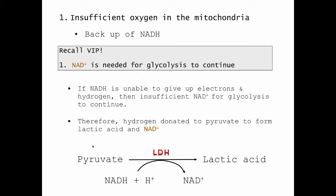So recall, as a stop gap, pyruvate can become a hydrogen acceptor in the presence of the enzyme lactate dehydrogenase, and this frees up NAD for glycolysis to continue. The downside to this is lactic acid is formed.